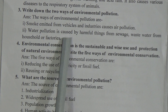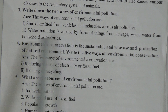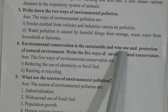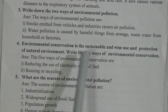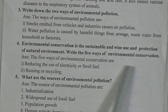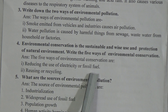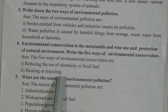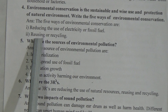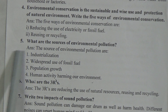Short question number 4: Environmental conservation is the sustainable and wise use and protection of nature's environment. Write the five ways of environmental conservation. The five ways of environmental conservation are: number one, reducing the use of electricity or fossil fuel; and number two, reusing or recycling.